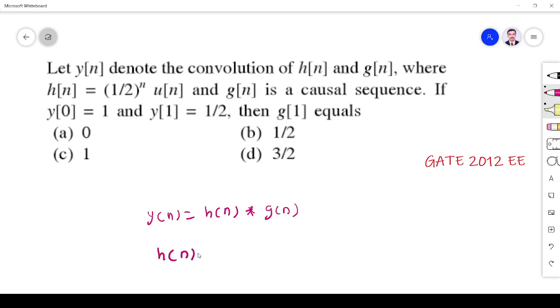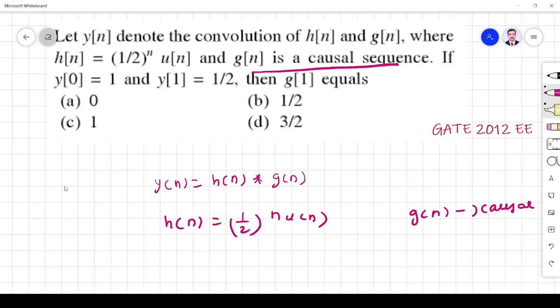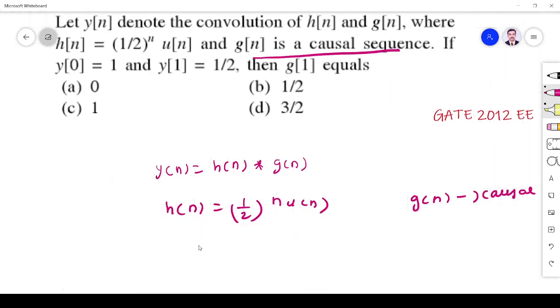And h of n is equal to 1/2 to the power n of u of n. And g of n is positive. And if y of 0 is 1 and y of 1 is 1/2, then g of 1 is what?